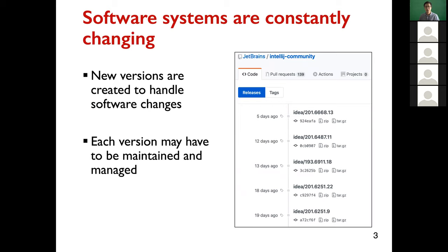As we know, when we use GitHub or other software systems, server systems are constantly changing. If we look at the history of a repository, we can see that there are multiple versions created to handle software changes, and each version may have multiple revisions or commits used to maintain and manage the system.